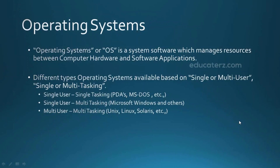There are different types of operating systems available based on the features they offer, like RTOS, networking operating systems, and embedded operating systems. Here we look into operating systems mainly divided based on user-handling capability and multitasking or single-tasking capabilities. When a system can handle only one process at a time, or do only one specific task at any particular time, then it is called a single-tasking system.